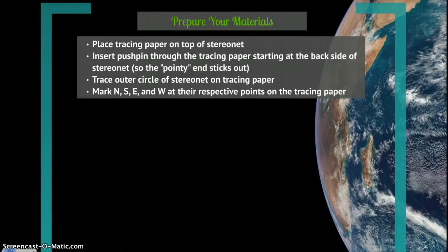Prepare by placing the tracing paper on top of the stereonet and inserting the pushpin through the tracing paper starting at the back side of the stereonet, so the pointy end sticks out. Then trace the outer circle of the stereonet on the tracing paper and mark north, south, east, and west at the correct spots.